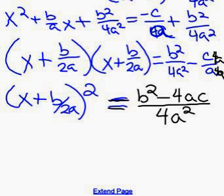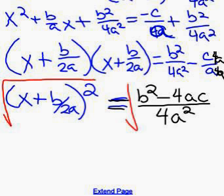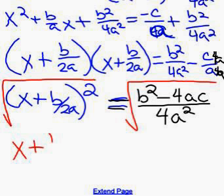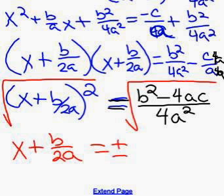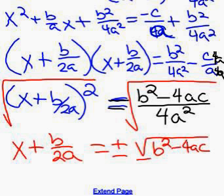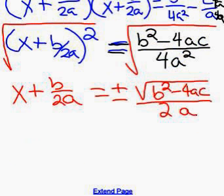Then you square root both sides. And so x plus b over 2a equals plus or minus the square root of b squared minus 4ac all over, well, square root of 4 is 2, and the square root of a squared is the absolute value of a. We'll leave an a there.